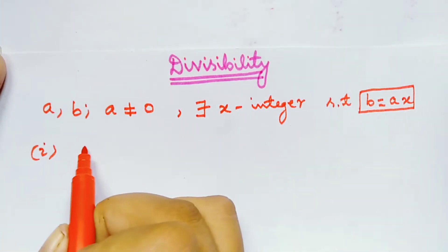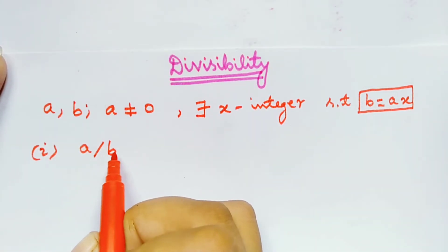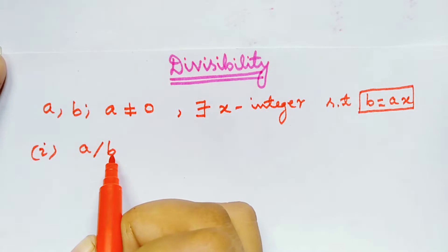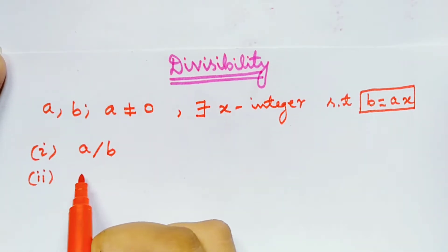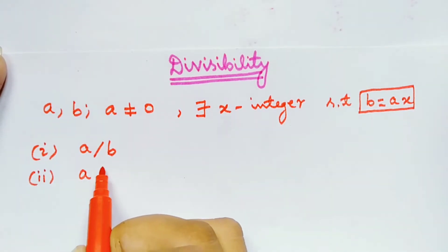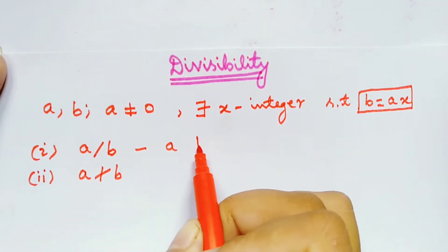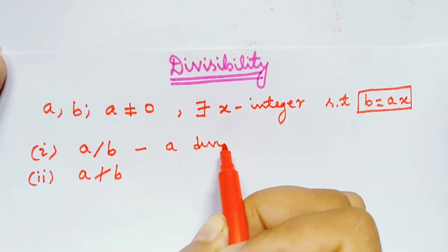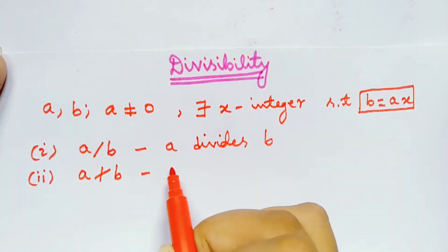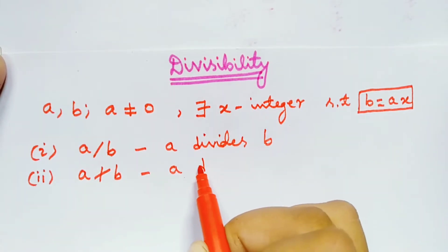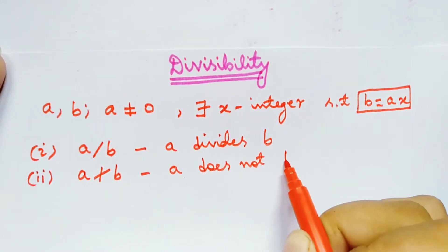If a divides b, we write it as a|b. But if a does not divide b, then we write a∤b. So this notation a|b means a divides b, and a∤b means a does not divide b.